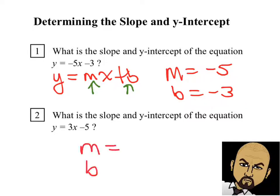Let's look at example number 2: y equals 3x minus 5. What's the slope going to be? Well, it's going to be 3. And what's the y-intercept? Negative 5. We kind of already learned that, so that's pretty basic.